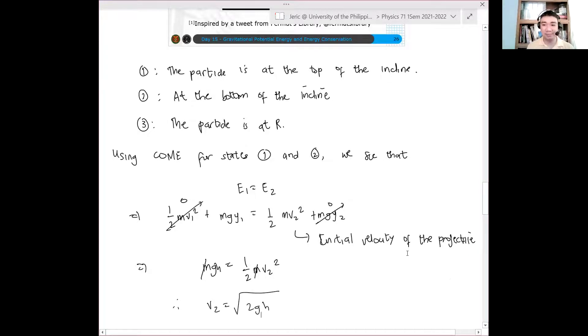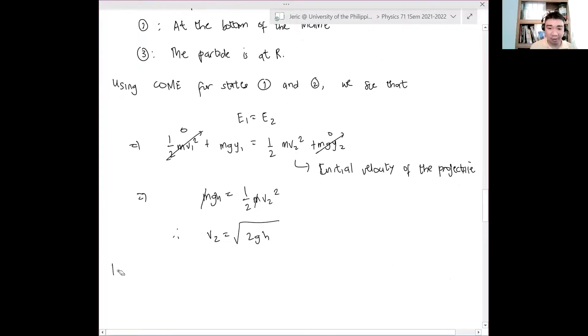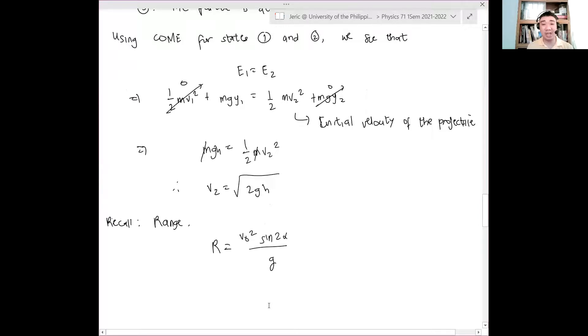And therefore, the velocity V2 is just square root of 2GH. Clear ba tayo dito? Now, recall the equation for the range. Anong formula natin for range? R is just equal to what? For those taking LE, diba tayo, V0 squared sine 2 alpha over G. Tama? Where alpha is the angle between the initial velocity vector and the ground and the positive X axis.